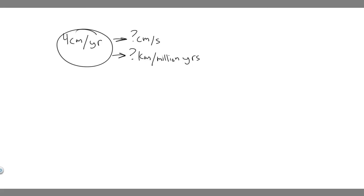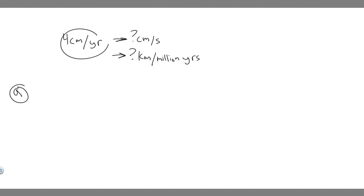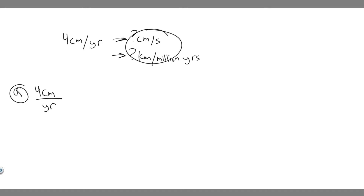In this problem, we're told that tectonic plates are going to move at four centimeters for every single year. What we're going to do is convert that to centimeters per second and then into kilometers per million years. There are going to be two parts to this, so let's start with Part A: converting four centimeters per year into centimeters per second.